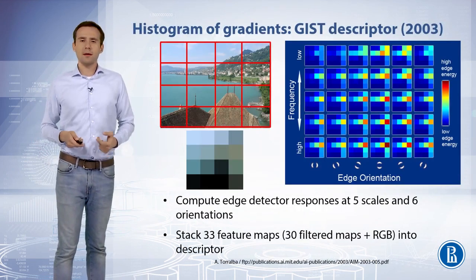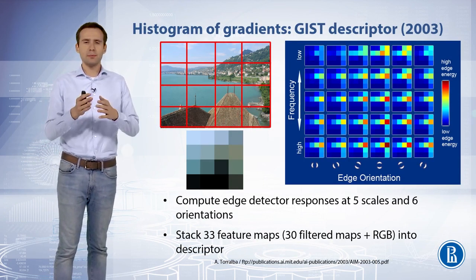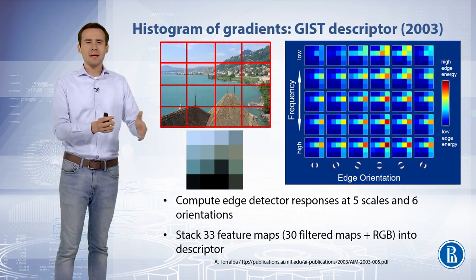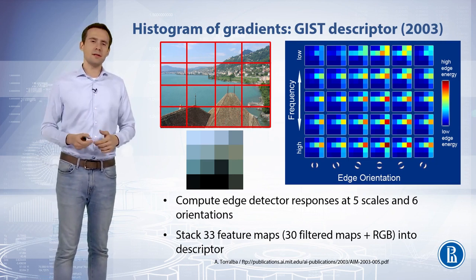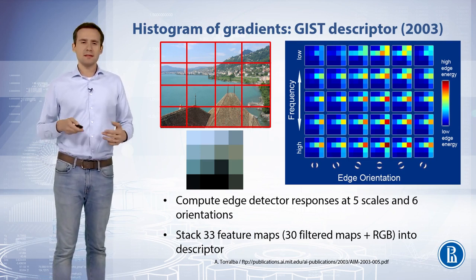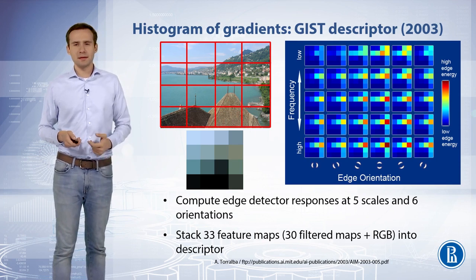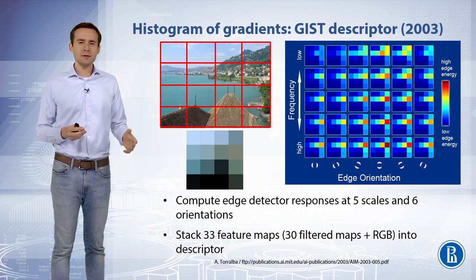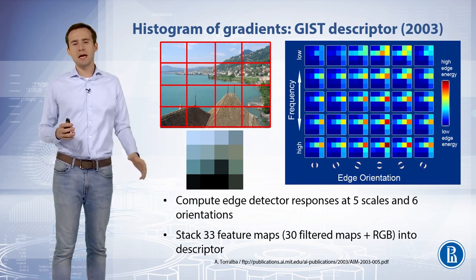Histograms of gradients are features used for image classification. They are computed by splitting the image into blocks, computing the gradients in each block, and aggregating these into histograms. As the histogram is computed for a fixed image resolution, such a descriptor is not ideal for content-based image search where objects of interest may be present in the image at different scales.